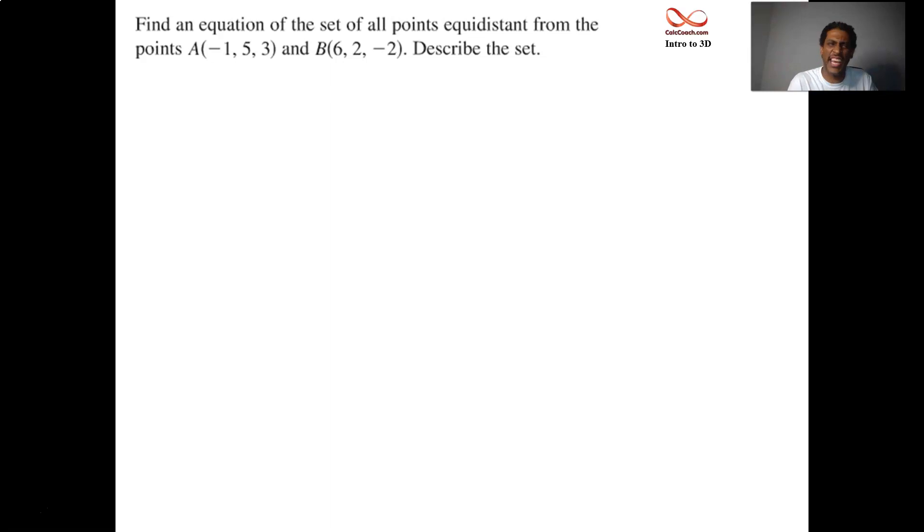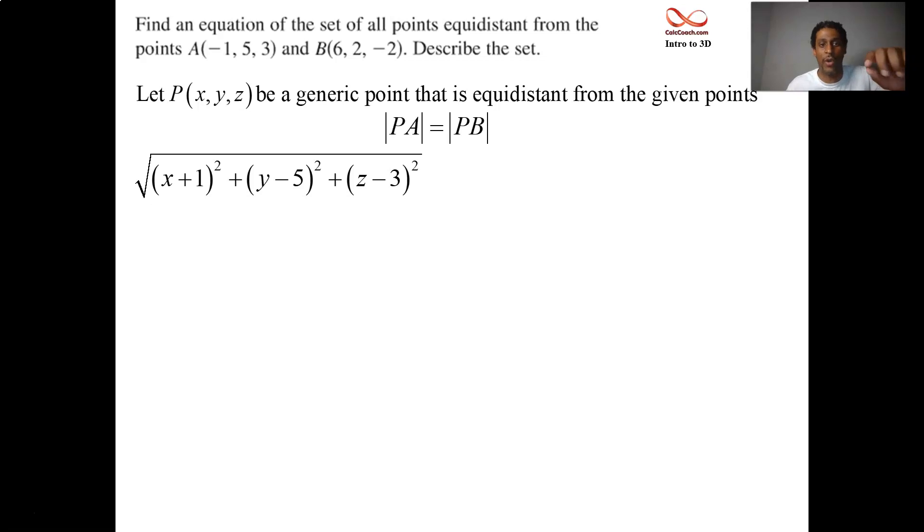Two points out in space, the set of all points that are equidistant between the two points. Point A and point B. And so the set of all points, let's start with a generic point P, where the distance that P is from A is equal to the distance that P is from B. Remember the symbols we have from before. This is a crude way to do it, we'll come back and revisit this next week, hopefully, and be able to do this in a much more sophisticated way. We're just going to set up the distance formula.